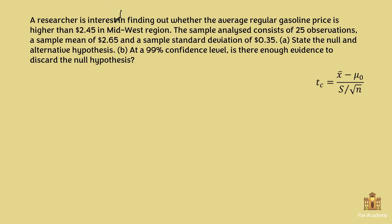For this exercise, we indeed need to use the t-test because the sample size is less than 30 — it's 25. So let's state the null and alternative hypotheses. A researcher challenges the traditional view and says the average regular gasoline price is higher than $2.45. So the null hypothesis is that the gasoline price equals $2.45, and the alternative hypothesis is that it's actually higher than $2.45.